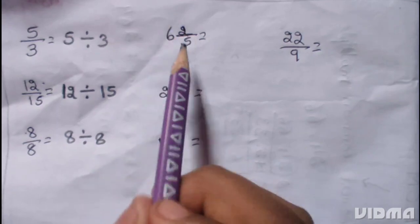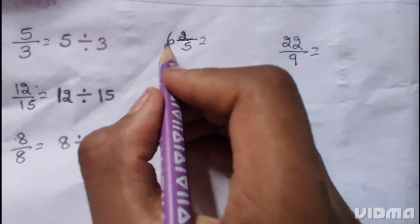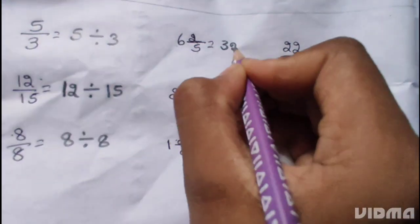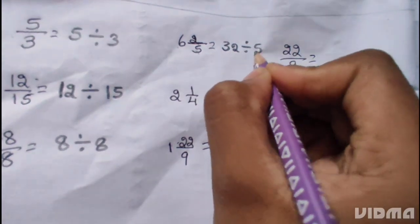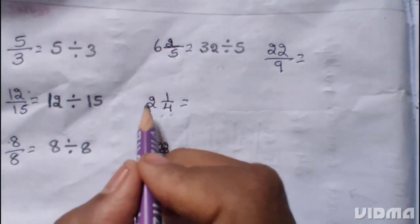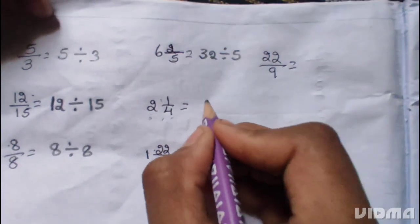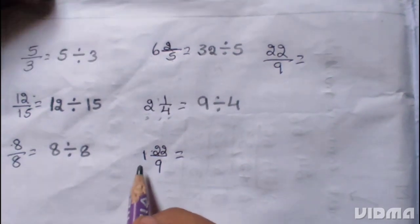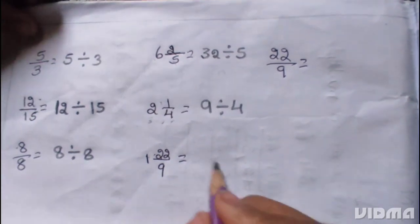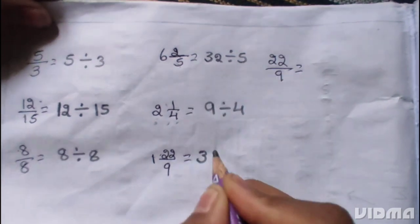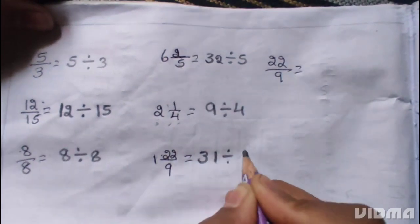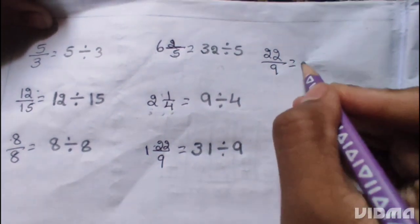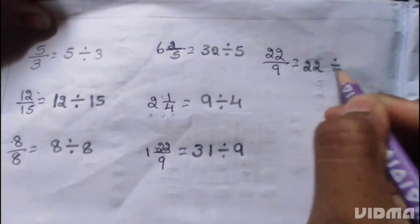6 by 5: 5 by 6 is 30, 30 plus 2 is 32, so 32 divide 5. 4 by 2 is 8, 8 plus 1 is 9, so 9 divide 4. 22 by 9 — 31 divide 9. 22 divide 9.